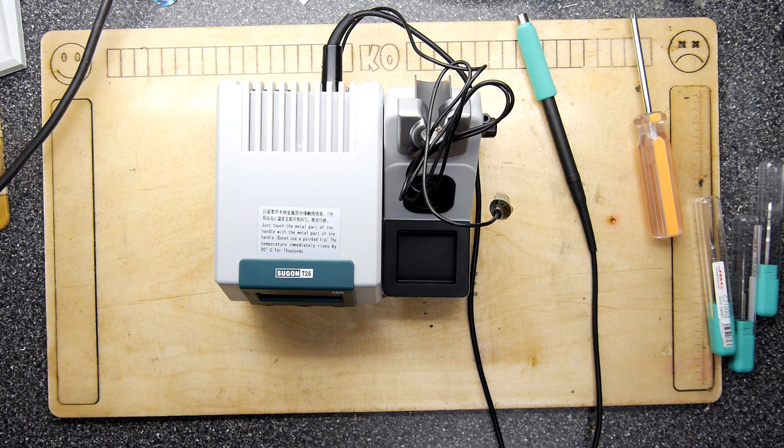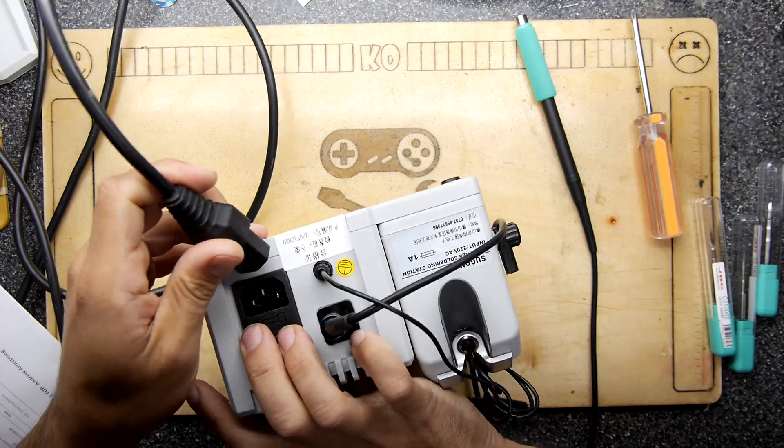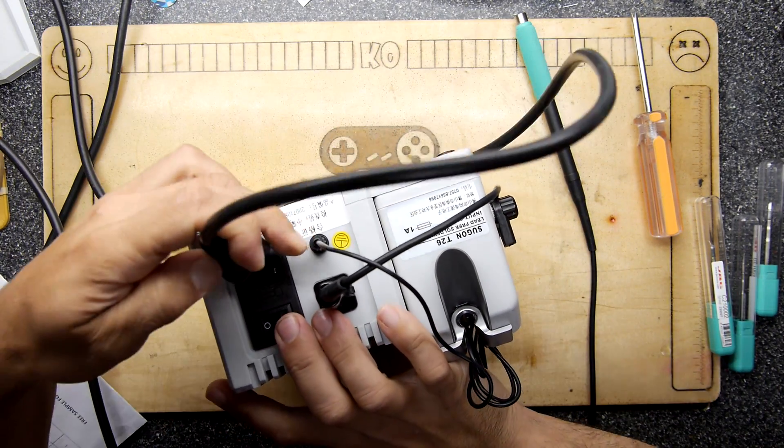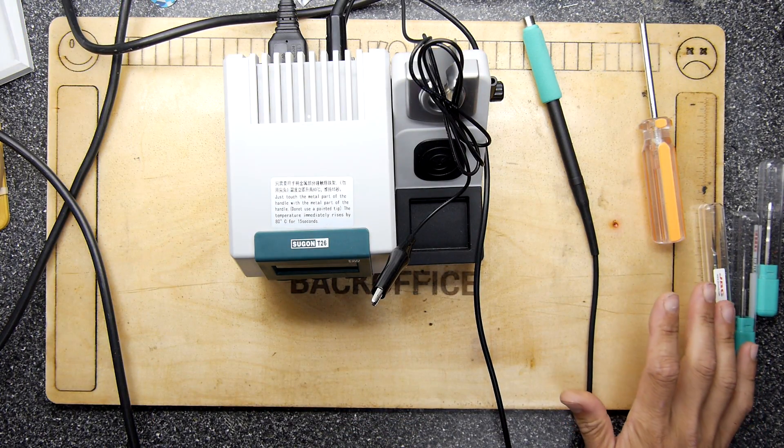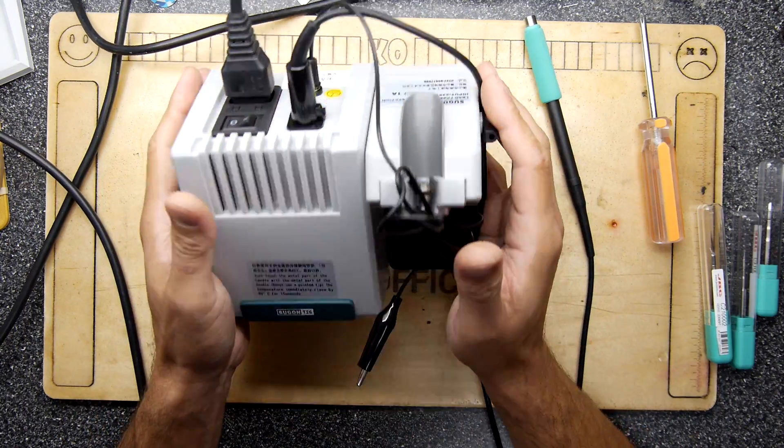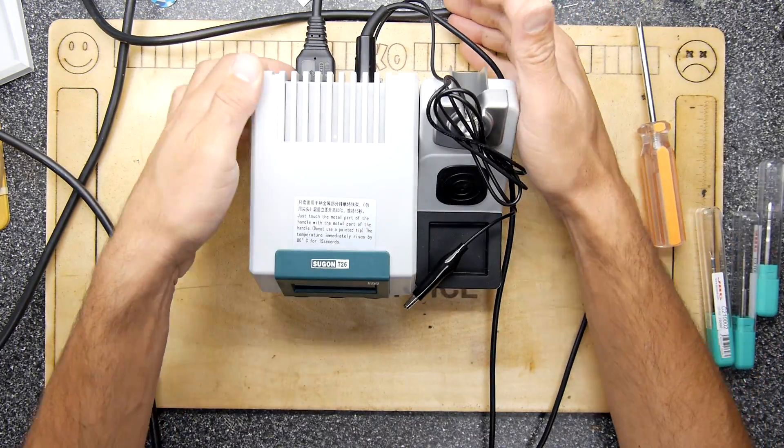I'm going to plug in the mains just to get it out of the way because there is an on-off switch on the back and it's currently now off. Let's plug that in, get that out of the way. Probably should check if it says 110 volts shouldn't I? Input 220 volts, that's fine. Always worth checking if you find it with the wrong plug.